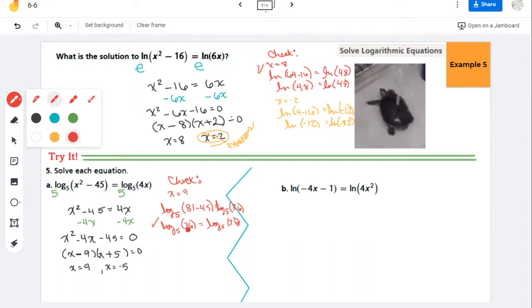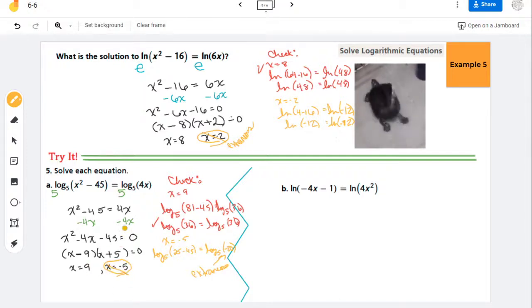They equal each other, and they are viable logarithms. That's what I'm saying there. So now let's check it out with x = -5. So here I get the log base 5 of 25 - 45 equals the log base 5 of 4 times -5 is -20. And I can actually stop here because this is what's making it extraneous, right? We don't need a negative under a logarithm.